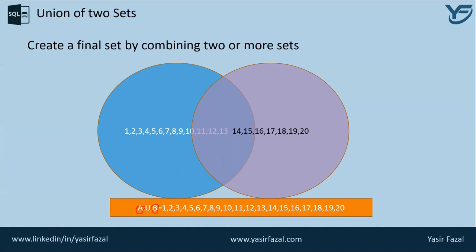The U symbol actually denotes the union of the set. And the resultant set is from one to 20.